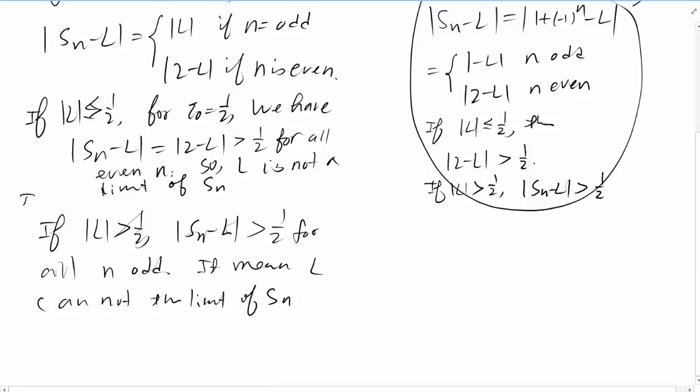Since we covered all numbers, our conclusion is that lim(n→∞) Sn does not exist. That's the end of our proof.